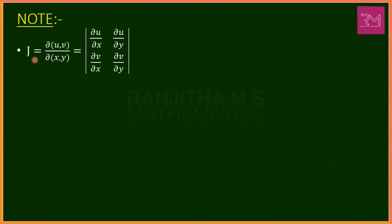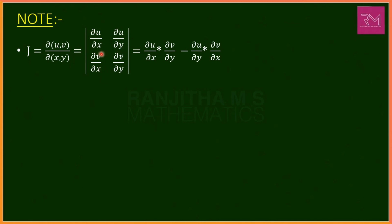We note that the Jacobian for u and v with respect to x and y is the determinant of del u/del x, del u/del y, del v/del x, del v/del y. To expand this determinant, we cross multiply: del u/del x into del v/del y minus del u/del y into del v/del x.